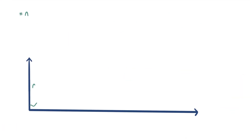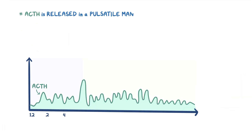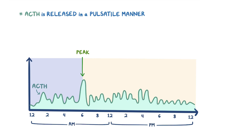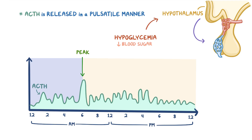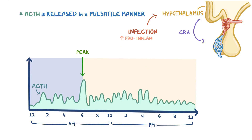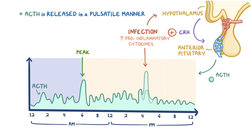Normally, ACTH is released in a pulsatile manner throughout the day and peaks in the morning around 6am, but it is also secreted in response to various forms of stressful stimuli. For example, the hypothalamus senses when there's hypoglycemia, or low blood sugar, and in response, it secretes more corticotropin-releasing hormone. Another example is during an infection, where pro-inflammatory cytokines act on the hypothalamus and anterior pituitary to cause ACTH secretion.